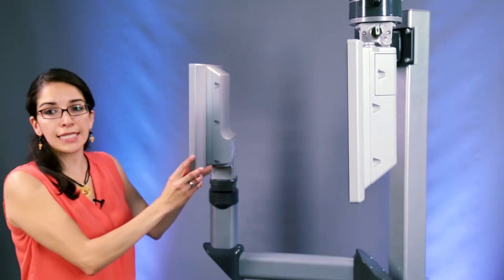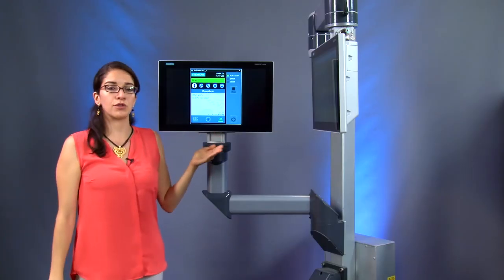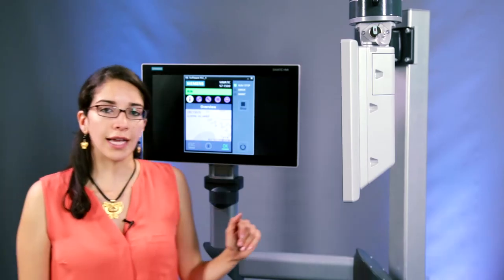With the industrial monitor, installation is also possible as a distributed solution. In doing so, the monitor can be located up to 30 meters away from an IPC.